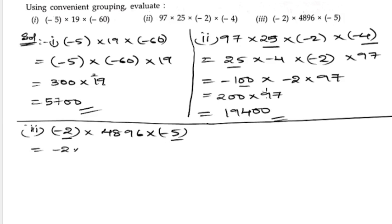4896 times 10 is simply 48960. We add a zero, so this is the answer: 48,960.